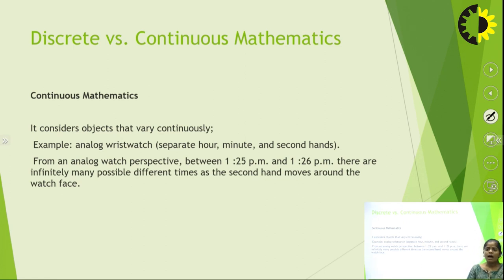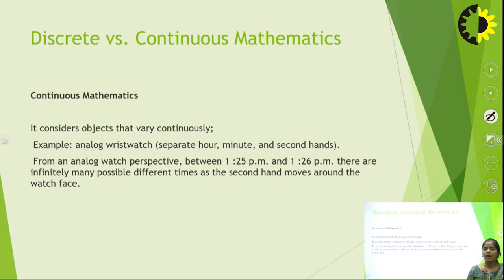Let us consider an example of an analog wrist watch. In an analog wrist watch, we have an hour hand, minute hand, and second hand. If I want to calculate the time between 1:25 and 1:26, there are many infinite possible timings in between, like 1:25 with 0.1 seconds, 0.2 seconds, up to 60 seconds.